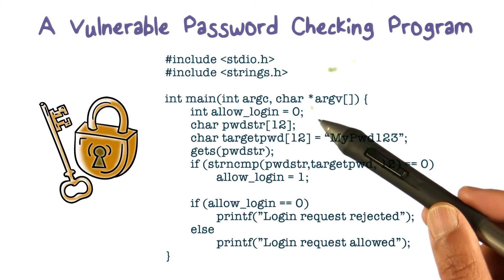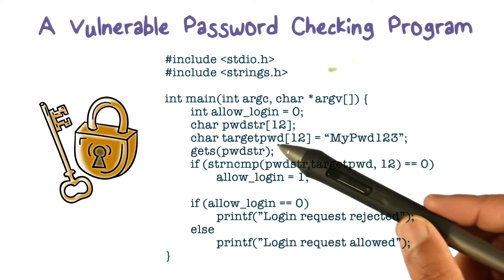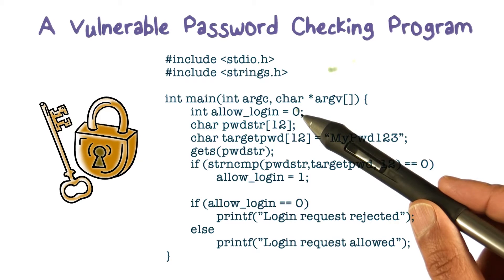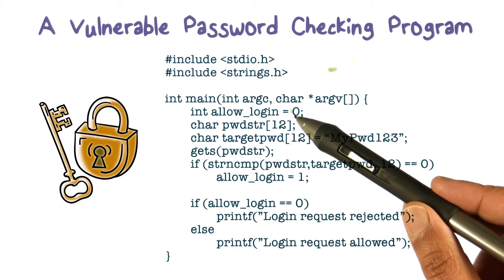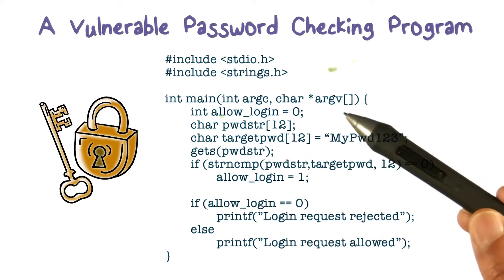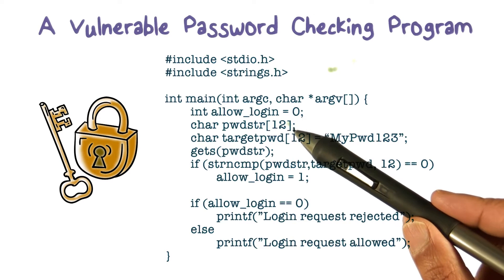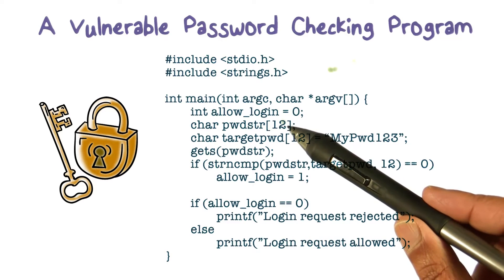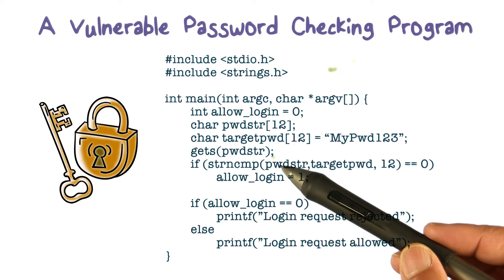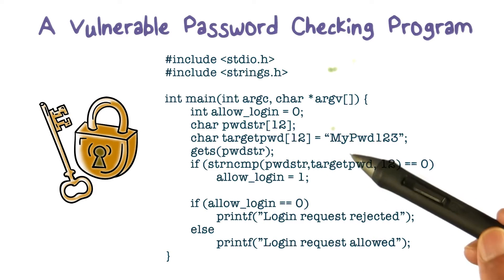It takes some arguments and has a bunch of local variables. It has an integer whose value at the end indicates whether login should be allowed or not. It has a local variable of size no more than 12 — that's where we're going to read the password that we ask the user to type. Then we have to compare that with something we know about the user's password.